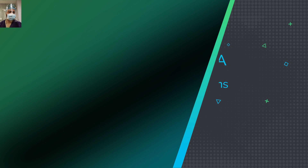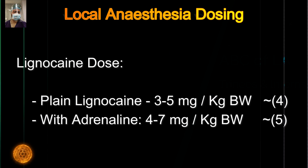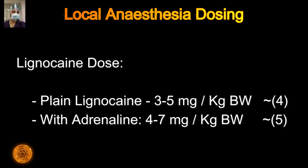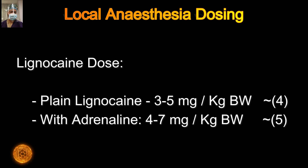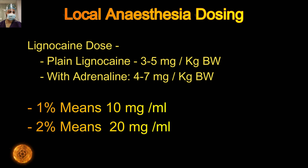Correct maximum dose calculation is a very vital part of local anesthesia administration, and every young surgeon or doctor should be aware of it. We have two formulations of lignocaine available: plain lignocaine with a maximum dose of 4 mg/kg body weight, and lignocaine with ADR at a maximum dose of 5 mg/kg body weight. One percent means 10 mg of drug per ml, and two percent means 20 mg of drug per ml — remember this to calculate the maximum dose.